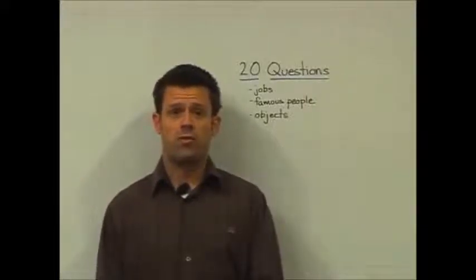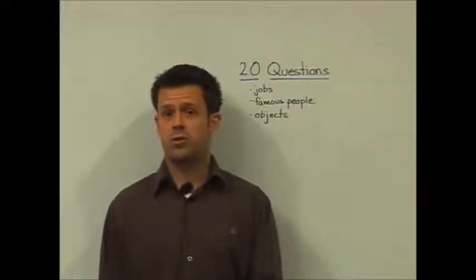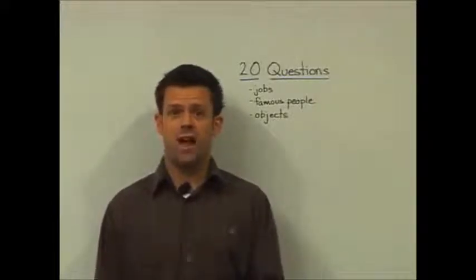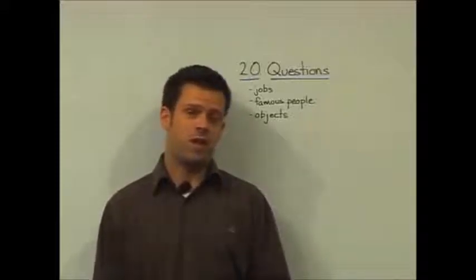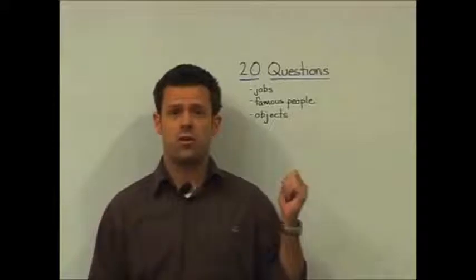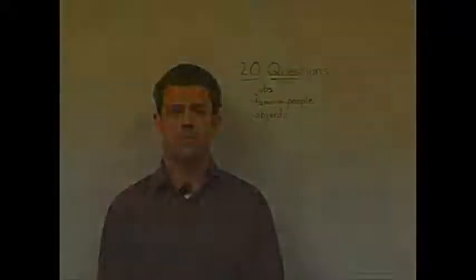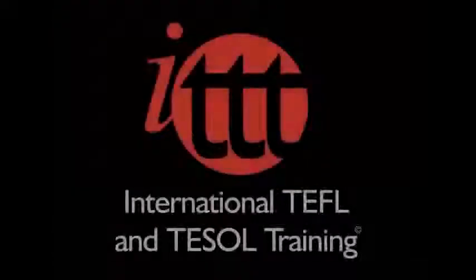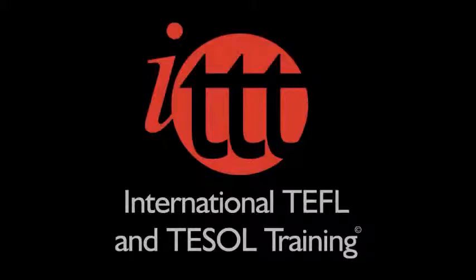The same can also be done for famous people, who am I? Of course, that famous person would still have to be alive, as if they've passed away, we would speak about them in the past tense. In fact, you can also use it for objects as well. Thank you.